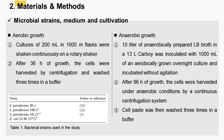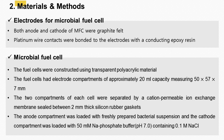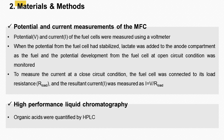Materials and Methods. First, microbial strains, medium and cultivation. Bacterial strains are listed in Table 1. Bacterial strains were grown under aerobic and anaerobic conditions. Direct electrode reaction of bacterial cells was examined by cyclic voltammetry; a cyclic voltammogram of the bacterial cell suspension was obtained using a potentiostat. Both anode and cathode of the MFC were graphite felt. Platinum wire contacts were bonded to the electrodes with a conducting epoxy resin. The fuel cells were constructed using transparent polyacrylic material and had electrode compartments. The two compartments of each cell were separated by a cation-permeable ion exchange membrane. Potential and current of the fuel cells were measured using a voltmeter. Organic acids were quantified by high-performance liquid chromatography.